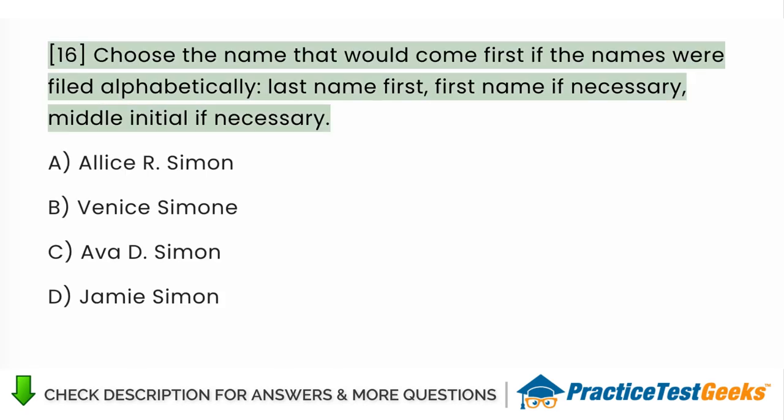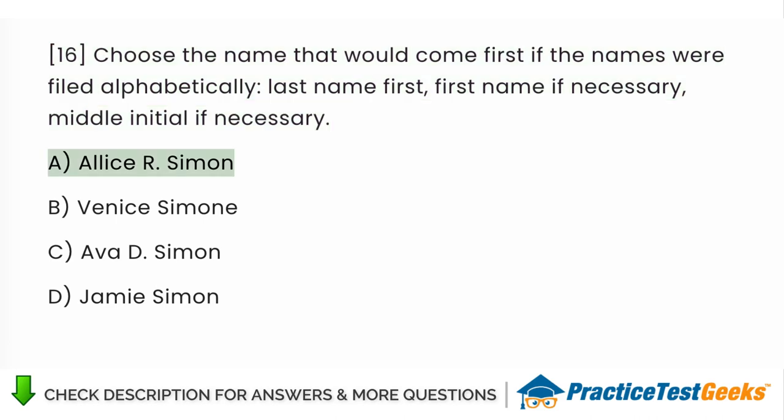Choose the name that would come first if the names were filed alphabetically, last name first, first name if necessary, middle initial if necessary A. Allison Simon B. Venice Simone C. Ava Simon D. Jamie Simon